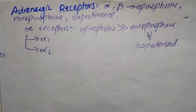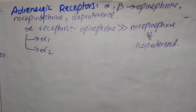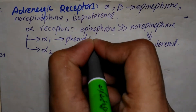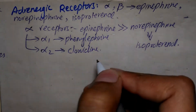Alpha receptors are classified into two subgroups on the basis of affinity. For example, phenylephrine is an agent which has higher affinity for alpha 1 receptors than alpha 2 receptors, whereas clonidine selectively binds to alpha 2 receptors and has less effect on alpha 1. So phenylephrine has more affinity for alpha 1 whereas clonidine has more affinity for alpha 2.